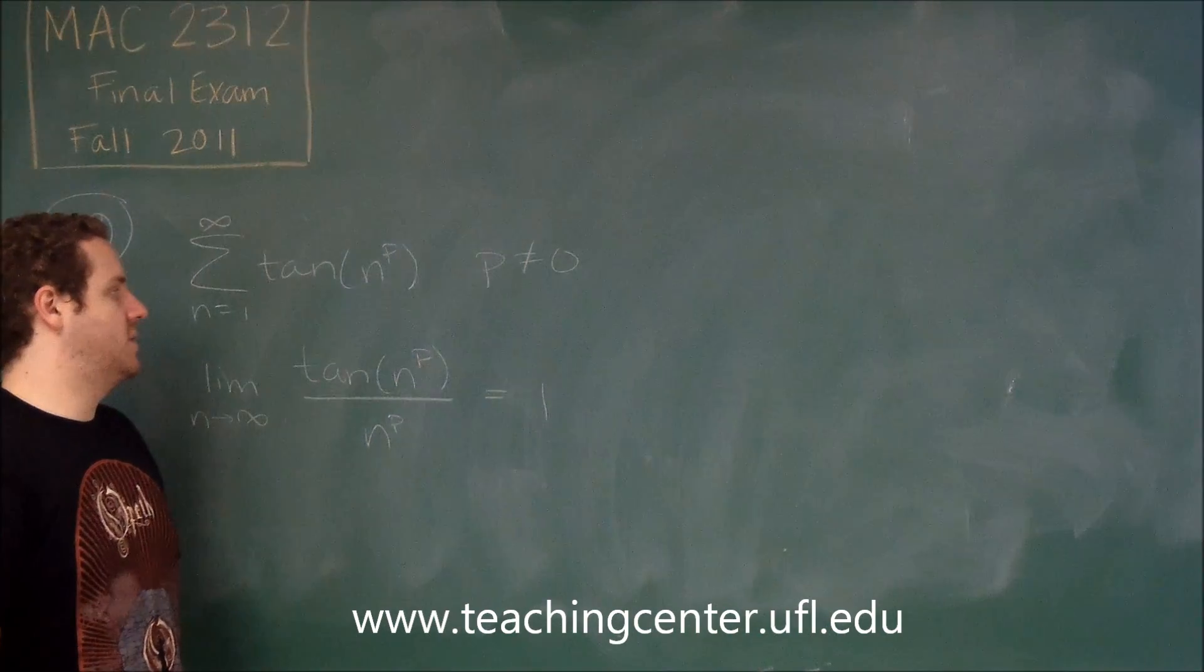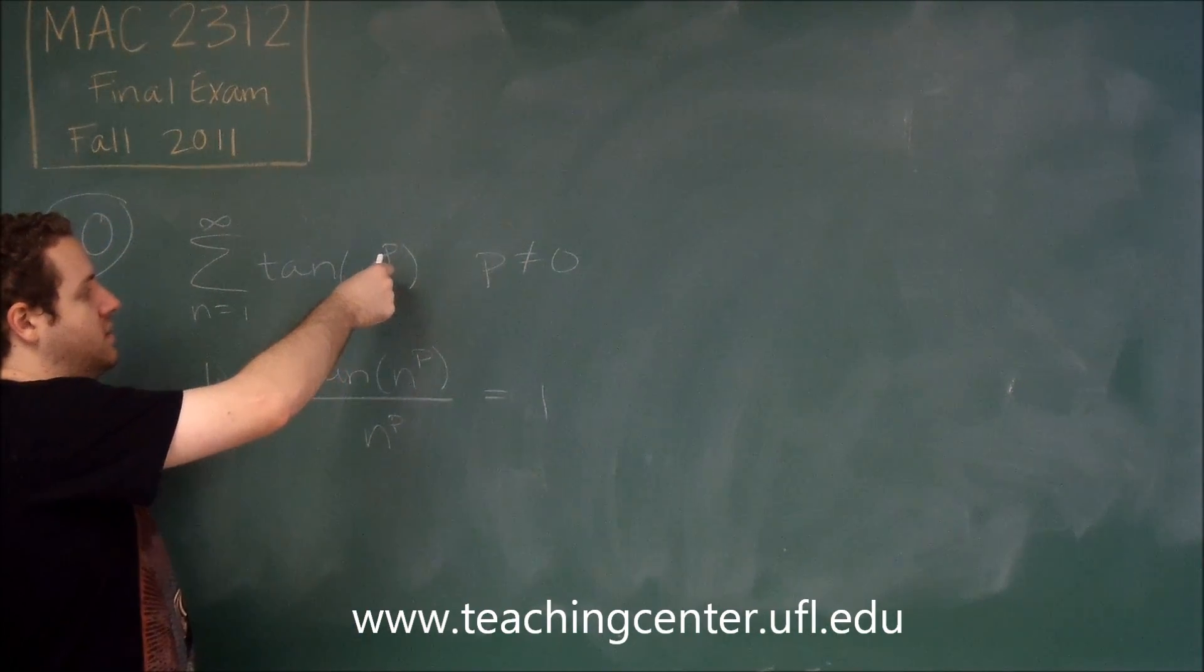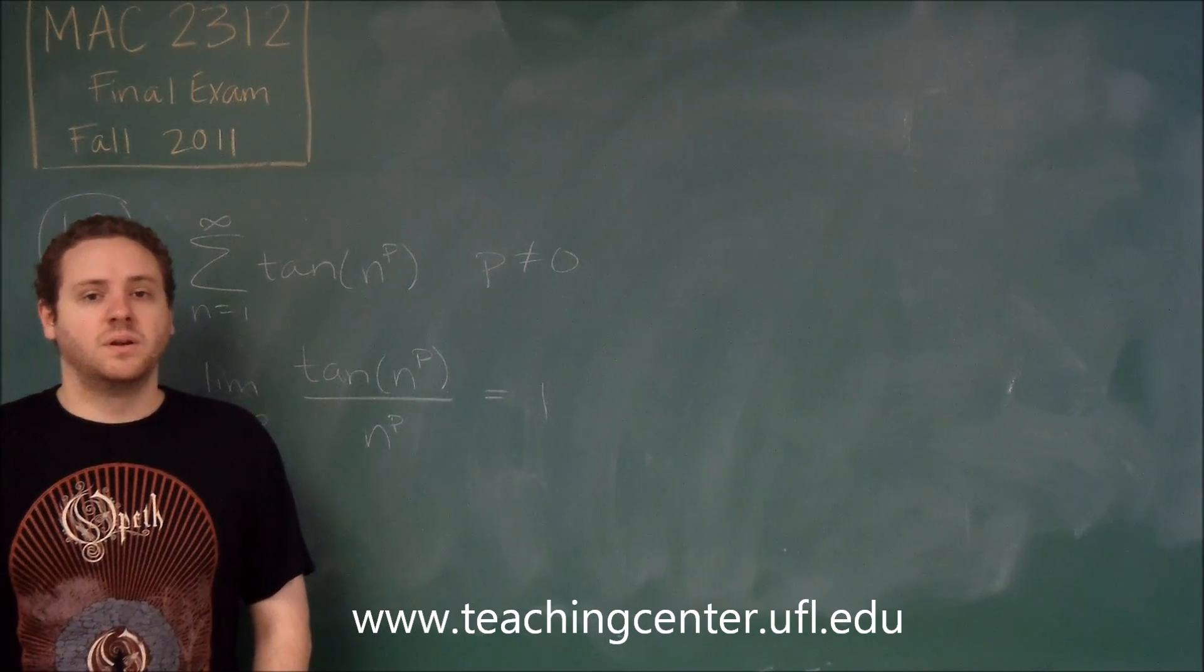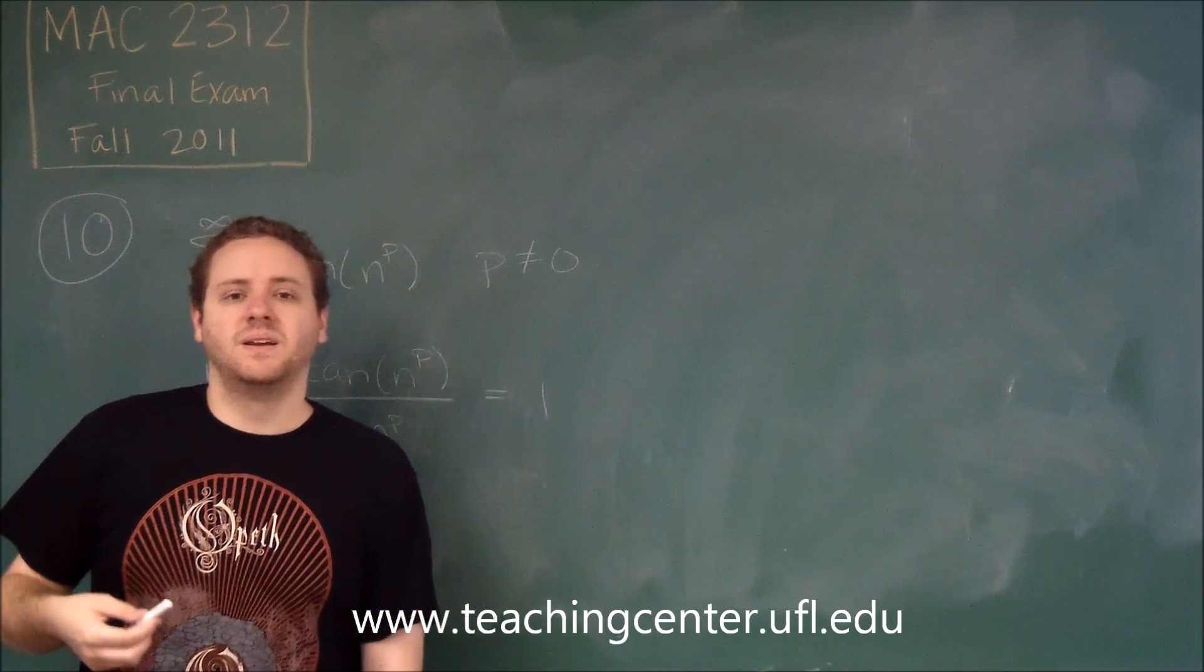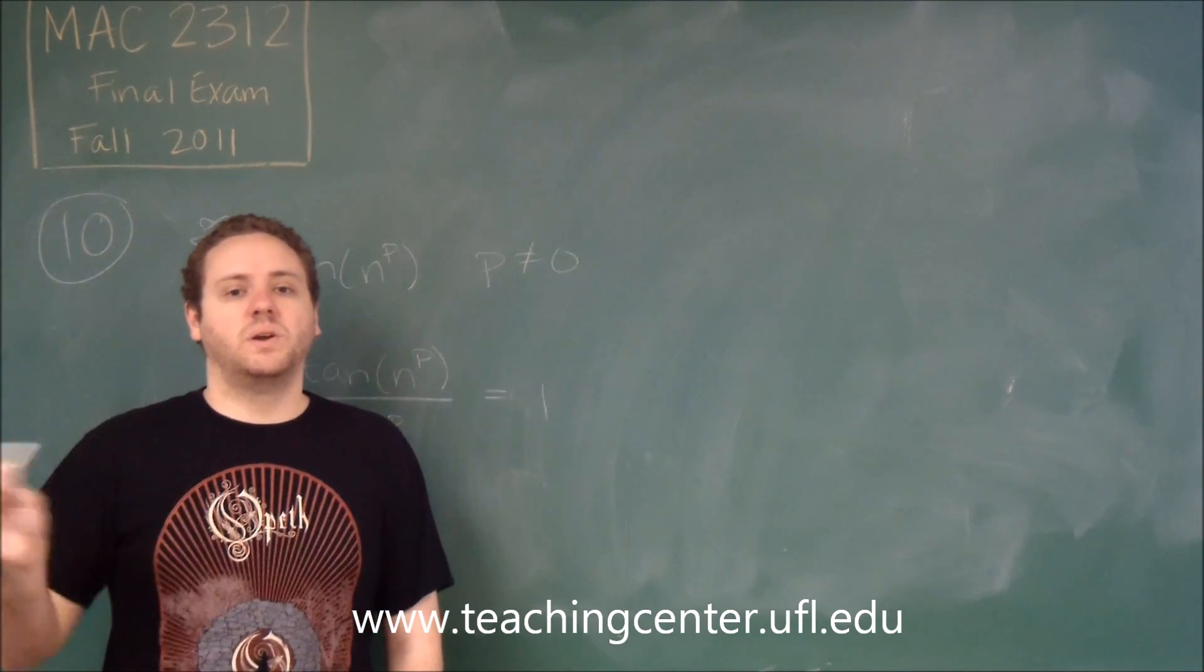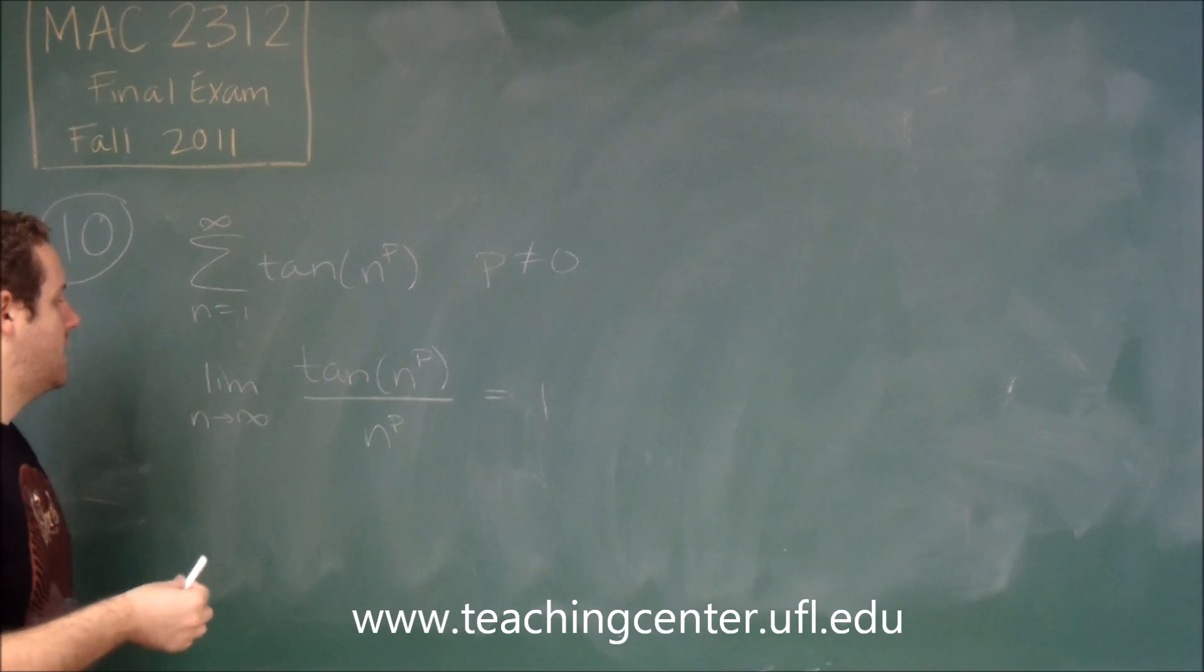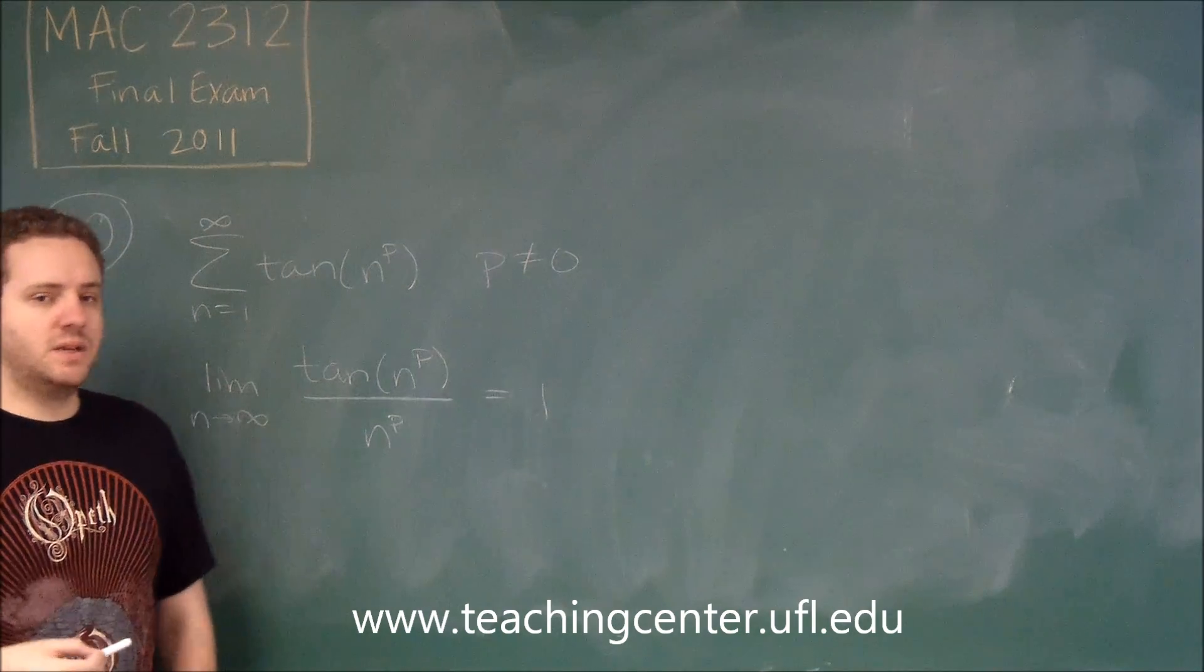If p was any number greater than 0, we'd have tan of n to some power, we're increasing that power. Tangent is a function that repeats often. It would be very difficult to determine anything that's going on. It would alternate weirdly and all kinds of stuff. It's probably not going to happen.